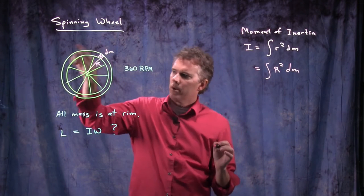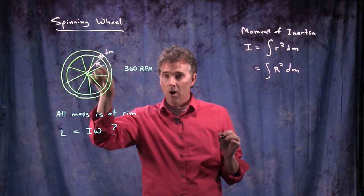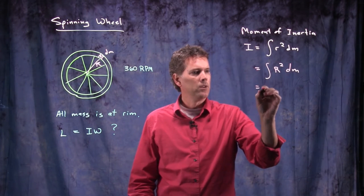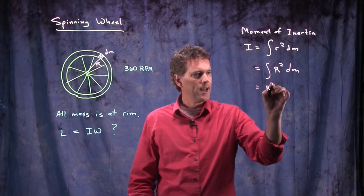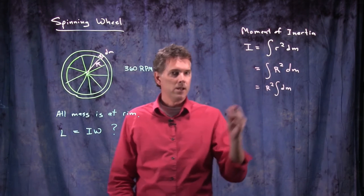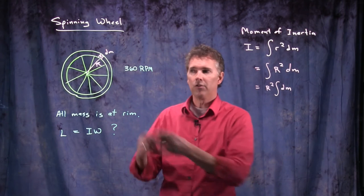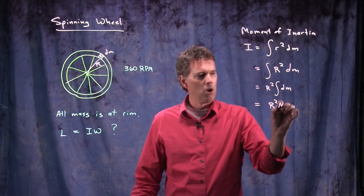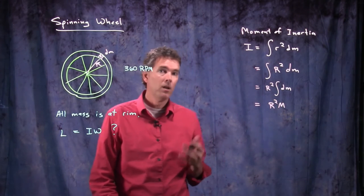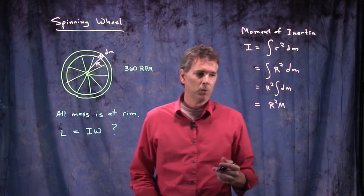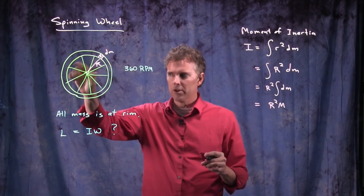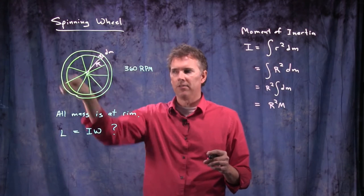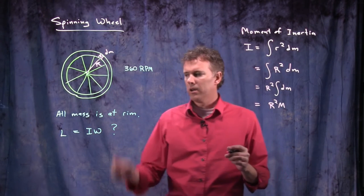But as we integrate around the wheel, that r doesn't change. We're always at the same axis of rotation, and so this comes right out of the integral. And now the integral of dm is just the total mass of the wheel. And so this whole thing becomes r squared times m. What's the mass of a spinning wheel? It is r squared times m. That's if you're ignoring any mass in the center, no mass in the spokes, all the mass at the rim of the wheel.